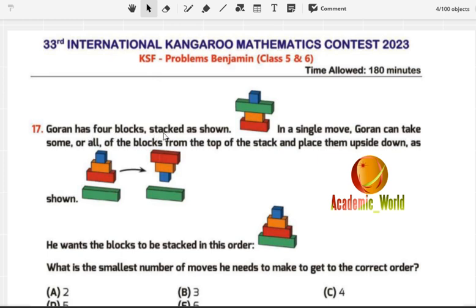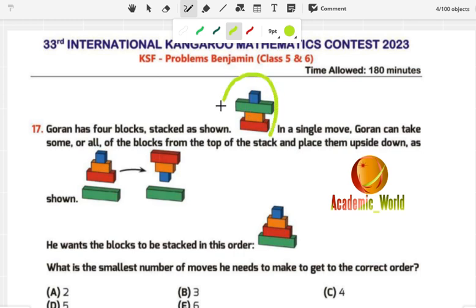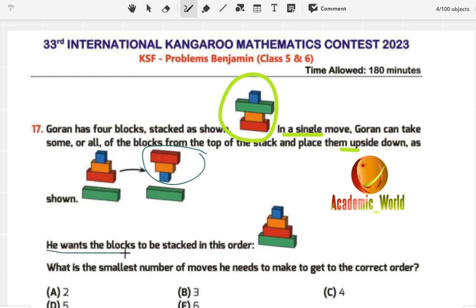The question is: Goran has four blocks stacked as shown. In a single move, Goran can take some or all of the blocks from the top of the stack and place them upside down as shown here.